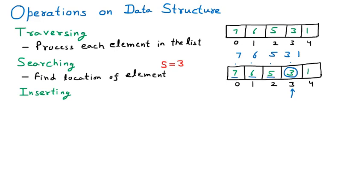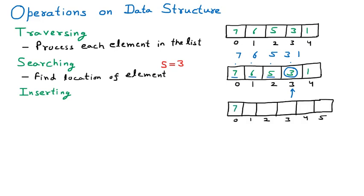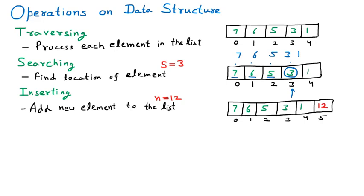Taking the same example: in this array the numbers available are seven, six, five, three, and one. I need to add one more number, which is twelve. This number will be inserted at the end, so twelve is inserted after one. This is called insertion — earlier five numbers were there and now one more number, twelve, is added. We can define insertion as adding a new element to the list.